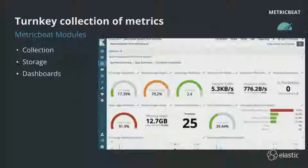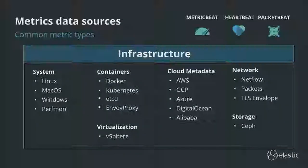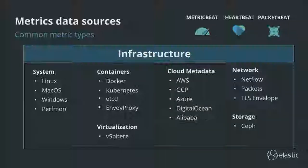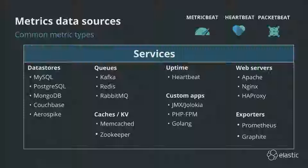Similarly, for turnkey collection of metrics within Metricbeat, we have a concept of modules that do the same thing as with logs — minus the parsing, since metrics are structured by definition. System and container metrics are very popular, and many users collect from Docker, Kubernetes, and other projects in that ecosystem. For cloud environments, we have cloud metadata processors that add relevant metadata to your metrics. For higher-level services, many have APIs you can poll for information like queue length, and ship that periodically alongside your logs.